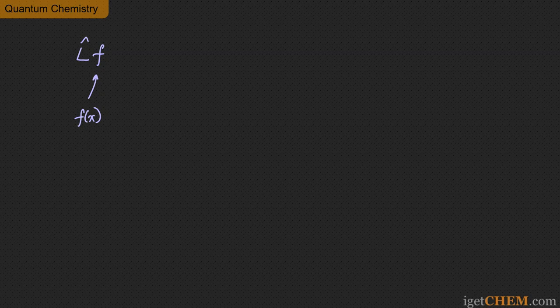Eigenfunction equations, or eigen equations, are equations like the following: if you apply a certain operator on a function f, for certain functions you will get back the same function f multiplied by a particular number — I'll just call that number lambda.